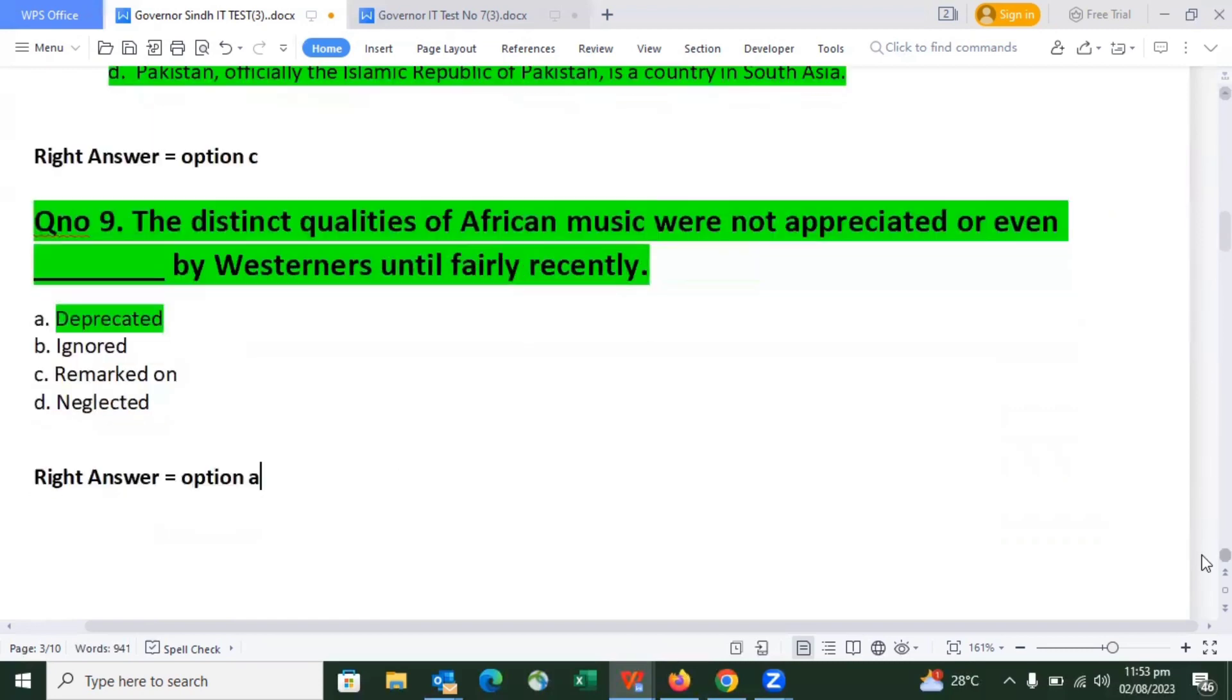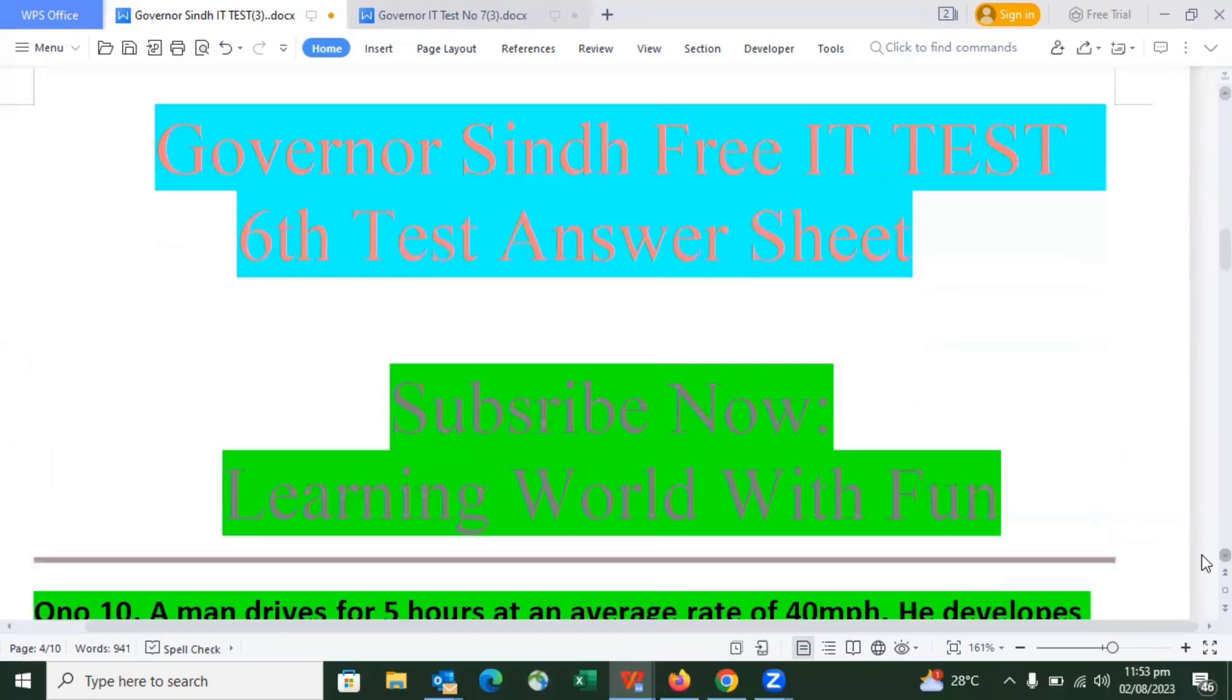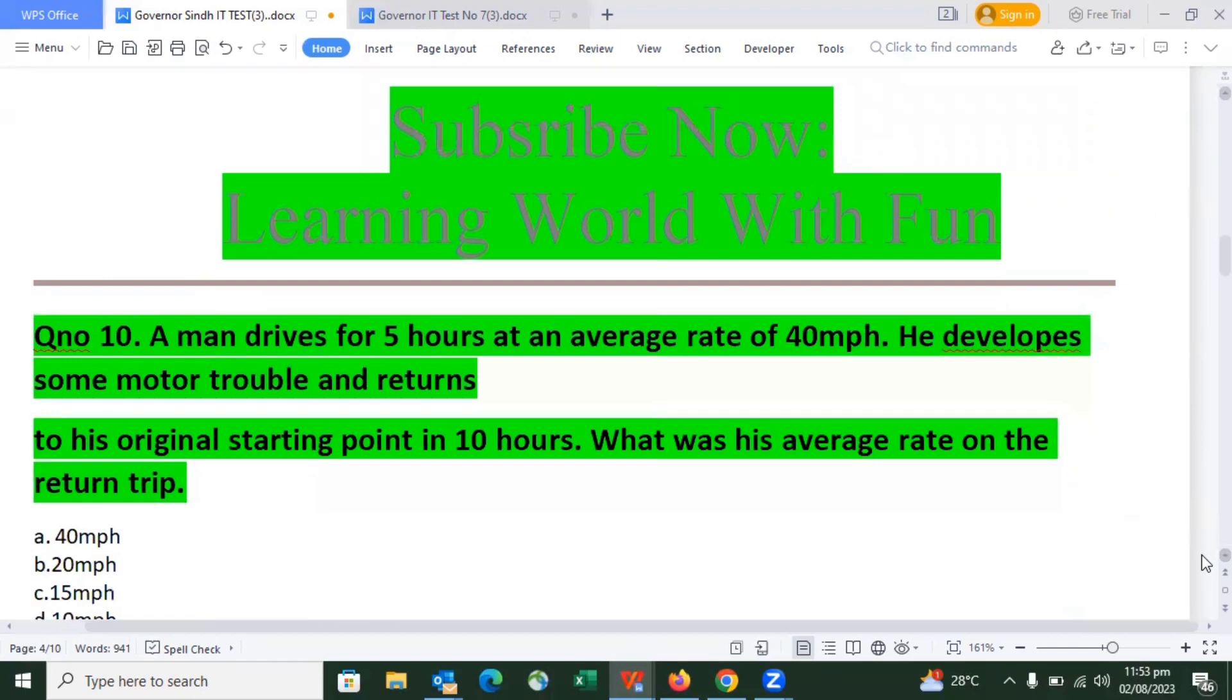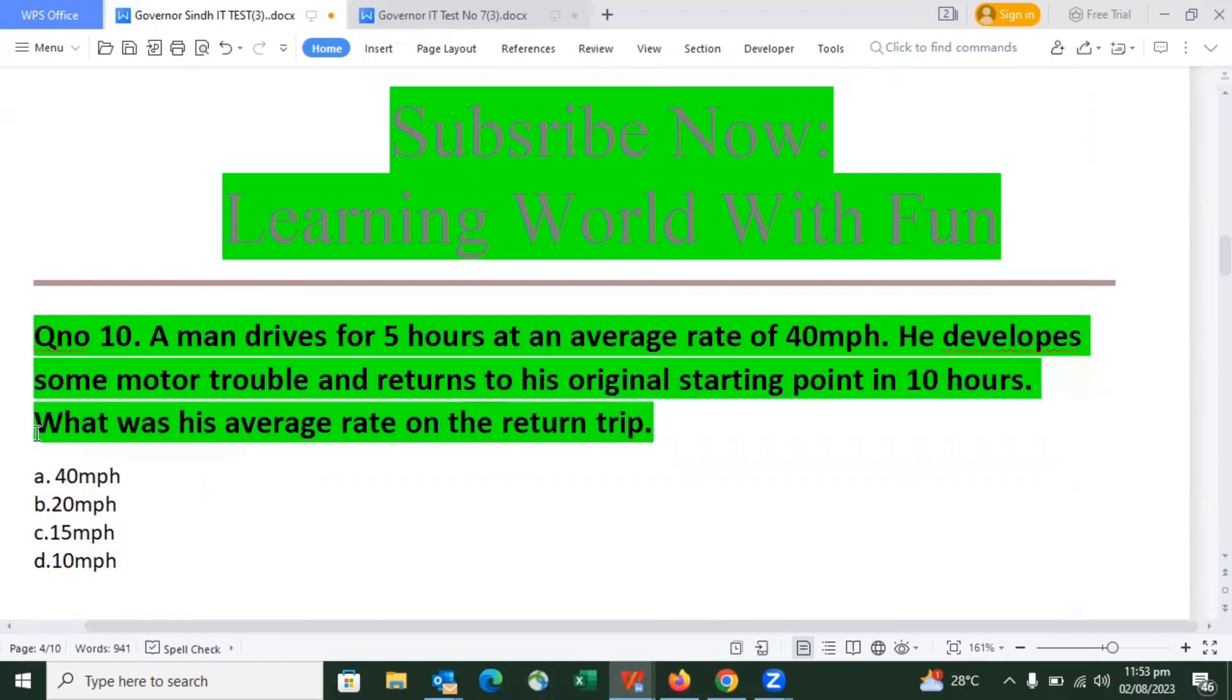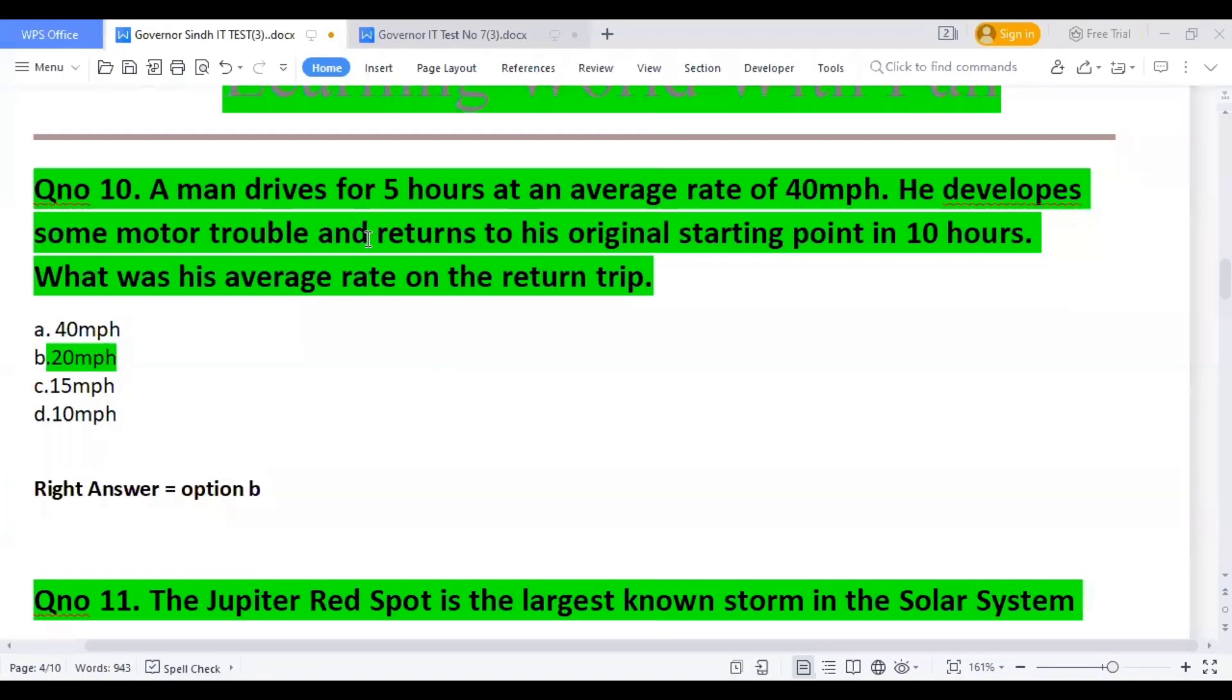Now move to the next question. This is Learning World with Fun. Like, share and subscribe for updated videos. A man traveled for 5 hours at a speed of 14 meters per hour. He developed motor trouble and returned to his original position in 10 hours. What was his average rate on the return trip? The right answer is option number 3, which is 6.3 meters per hour.